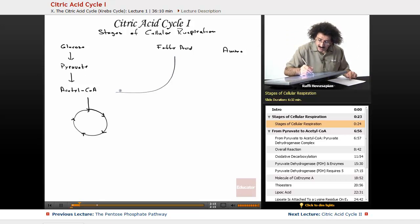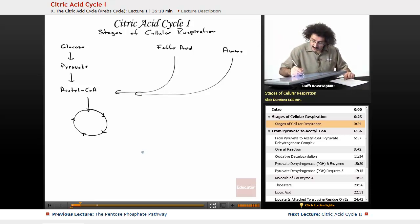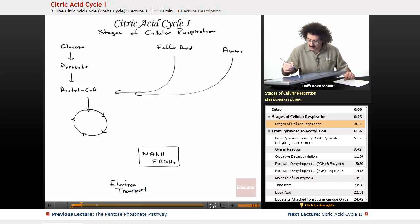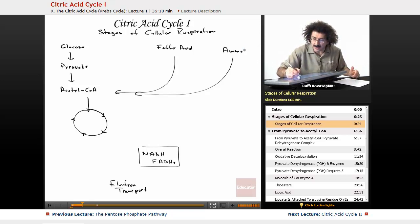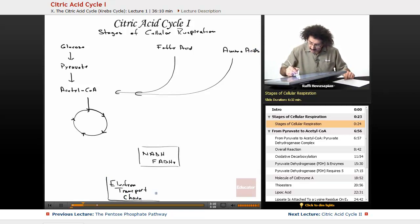I'll go ahead and draw that this way. Now let me put over here NADH and FADH2. I'll put a little rectangle around that. Then over here, I'll put the electron transport chain, the final step in cellular respiration, oxidative phosphorylation. This is the final culminating step of cellular respiration, the ultimate breakdown of the things that we ingest, whether it's fatty acids, amino acids, and carbohydrates.